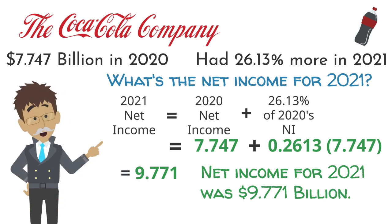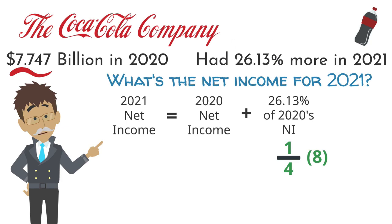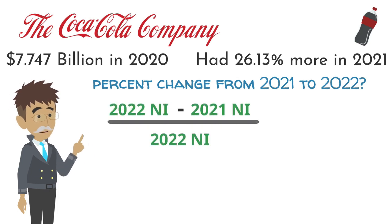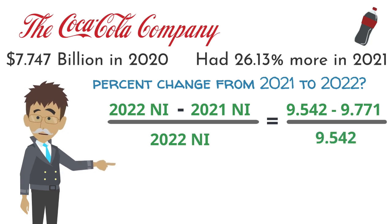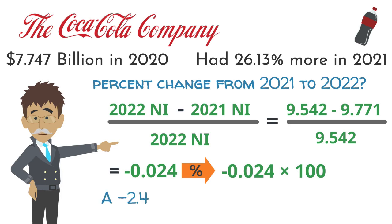We could verify this calculation with an estimation. 26 and 13 hundredths is close to 25 percent, which is the same as one-fourth. Seven and seven-tenths is close to eight, and one-fourth of eight is two. Adding two to the original 7.7 billion gives 9.7 billion, which means our answer should be close. To find the percent change, we subtract the two values and divide by the original. Simplifying gives us negative 0.024. Converting to a percent means multiplying by 100, giving a negative 2.4 percent change from 2021 to 2022.